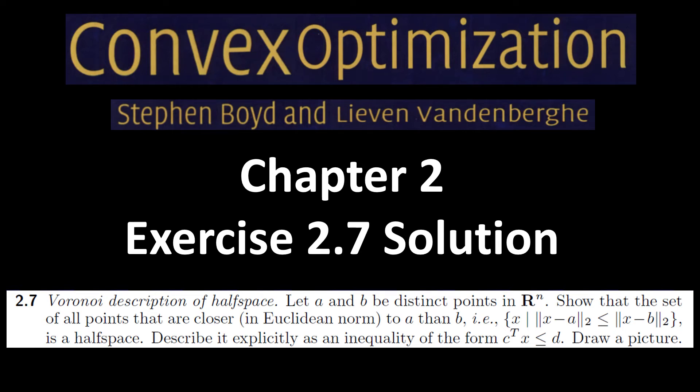Hello and welcome to my channel. This is the seventh question from chapter two of Convex Optimization book. In this video we are going to see that the set of all points that are closer to a than b is a halfspace.